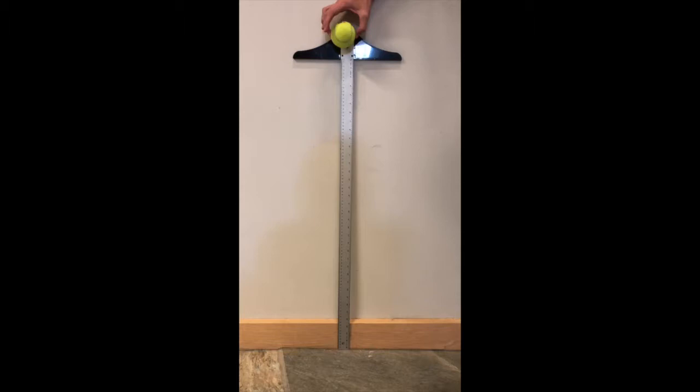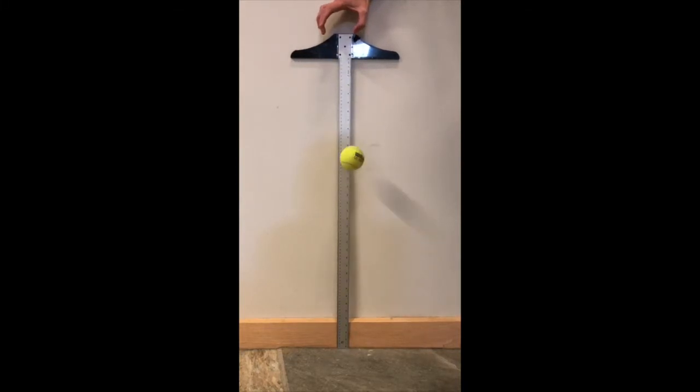For our experiment, we dropped our tennis ball from an initial height of 36 inches. The first rebound height was measured at 23.15 inches, yielding a coefficient of restitution of 0.802 from our previous equation.